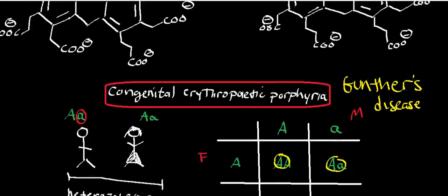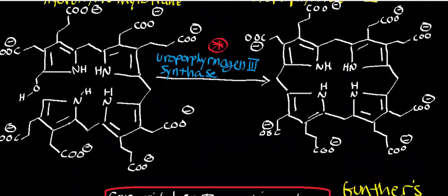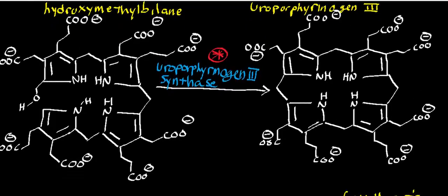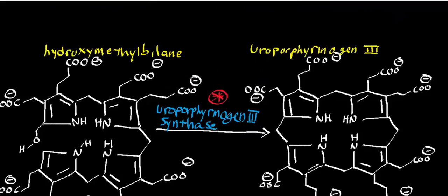If you have a deficiency of uroporphyrinogen 3 synthase, you're going to be accumulating a lot of hydroxymethylbilane, and that's what leads to a lot of the symptoms. Now, doing some structural analysis on hydroxymethylbilane versus uroporphyrinogen 3, you should note several things.